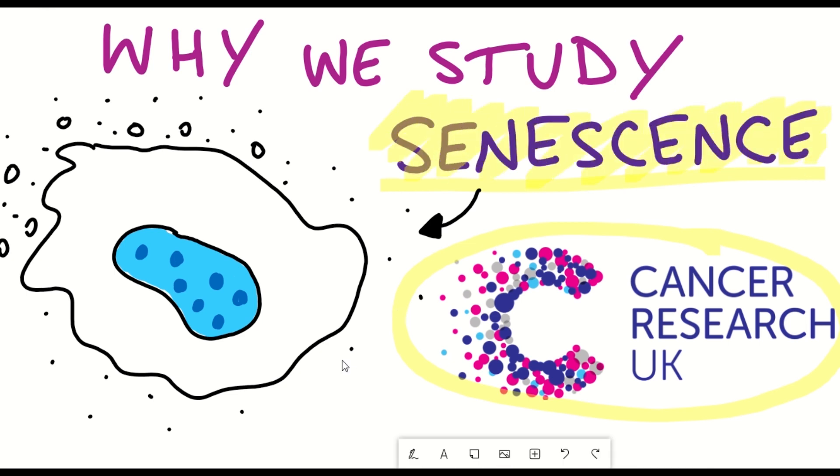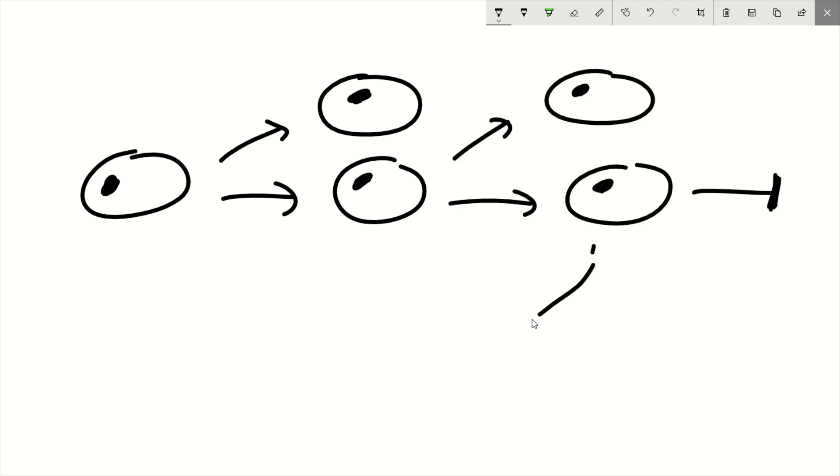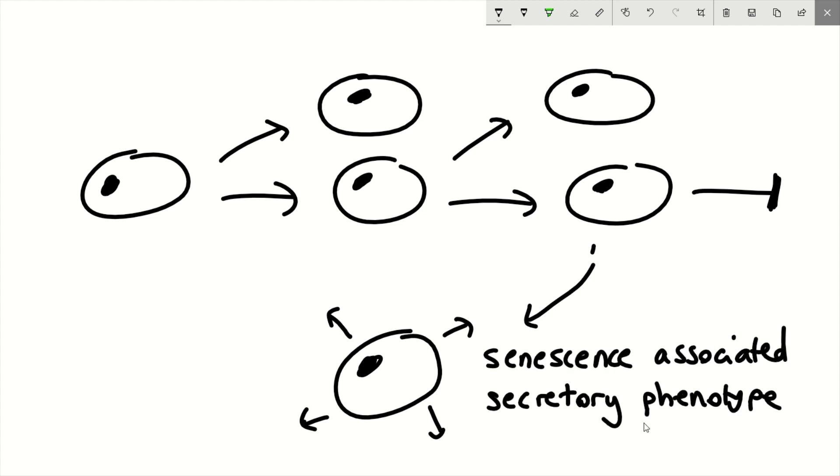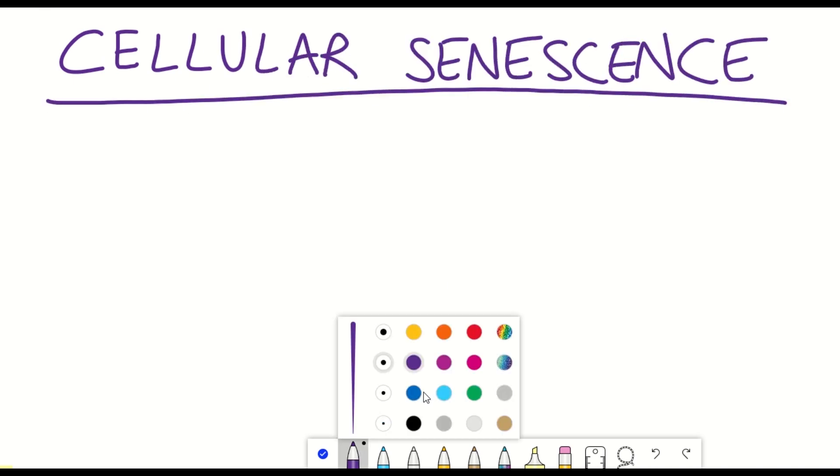Cellular senescence is often described by two key characteristics, one of which is a cell cycle arrest when the cell stops proliferating, and the second is the secretion of factors which are referred to as the senescence-associated secretory phenotype, otherwise known as the SASP. But these are just two characteristics of senescent cells, and more recently there have been four key hallmarks that have been used to describe cellular senescence.